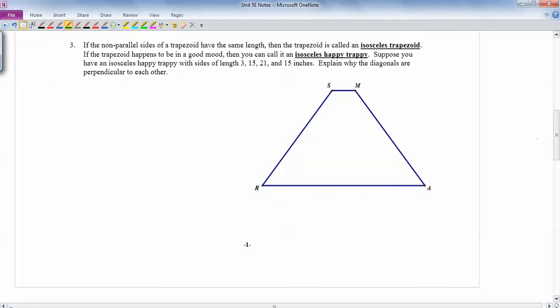Okay. If the non-parallel sides have the same length, then the trapezoid is called an isosceles trapezoid. So if this equals this, and you know it's a trapezoid so the top and bottom are parallel, then you know that it's isosceles. Oh my god. Where did I write this? If the trapezoid happens to be in a good mood, then you can call it a happy trape. Okay. I'm guessing it was late whenever I wrote that one. Suppose you have an isosceles happy trape with sides of 3. So we'll make this one 3. The isosceles sides are 15. And the base down here is 21.